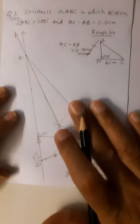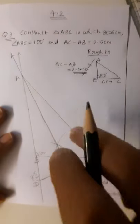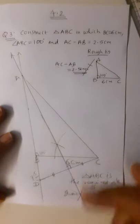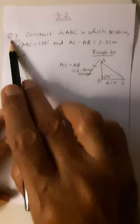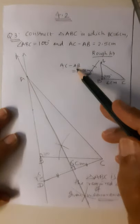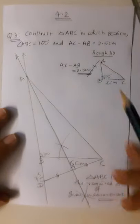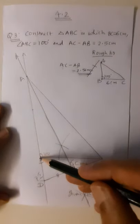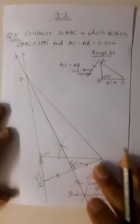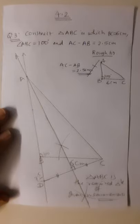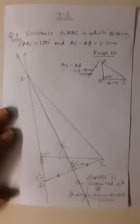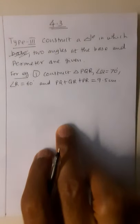This is the third sum of Practice Set 4.2 — Type 2 — but here the difference between opposite side and adjacent side is given. In the previous two sums, the difference between adjacent side and opposite side was given; here it is opposite side minus adjacent side, so we mark the difference below the base. Now we are moving to Practice Set 4.3 for the third type of construction.